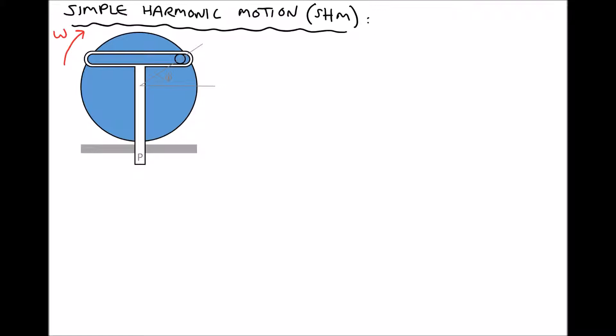Pictured in white we have the yoke. Because the yoke is constrained so it can only move in the vertical direction, as the disc rotates the pin moves through the slot, and as the pin moves through the slot the vertical position of point P at the bottom is going to change. From its current position, as the disc rotates clockwise the pin is going to move downwards, and once the pin reaches the bottom position and the rotation continues, point P is going to move upwards.